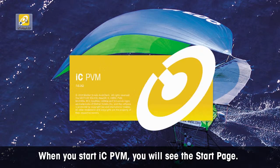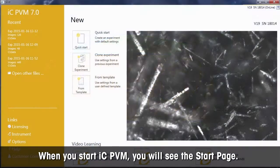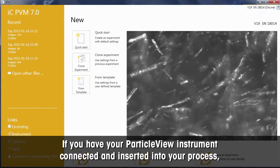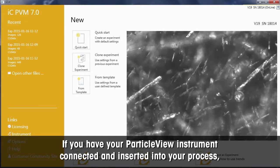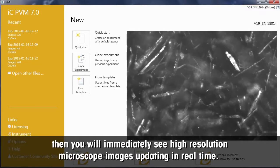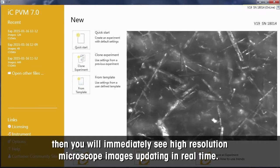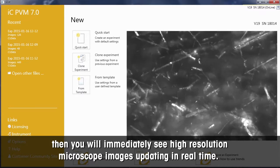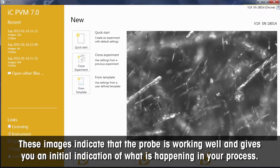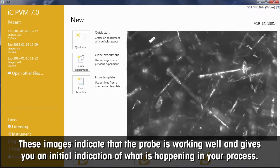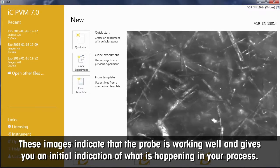When you start ICPVM, you will see the start page. If you have your ParticleView instrument connected and inserted into your process, then you will immediately see high-resolution microscope images updating in real-time. These images indicate that the probe is working well and gives you an initial indication of what is happening in your process.